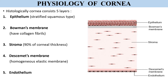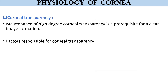Histologically, the cornea consists of five layers. The first layer is the epithelium, made up of stratified squamous cells. The second layer is Bowman's membrane, an acellular structure consisting of condensed collagen fibrils; once damaged, this layer does not regenerate. The third layer is the stroma, which forms 90 percent of the corneal thickness and mainly consists of collagen fibrils and other cells. The fourth layer is Descemet's membrane, a thin homogeneous elastic layer that readily regenerates after injury. The fifth layer is the endothelium, made up of a single layer of flattened polygonal cells.